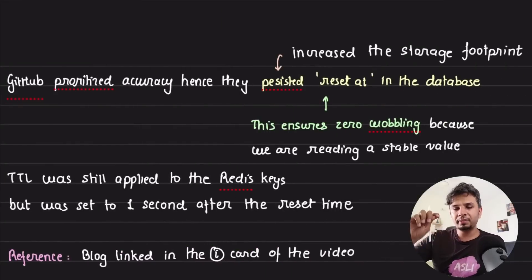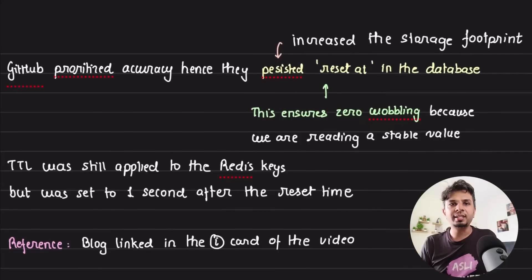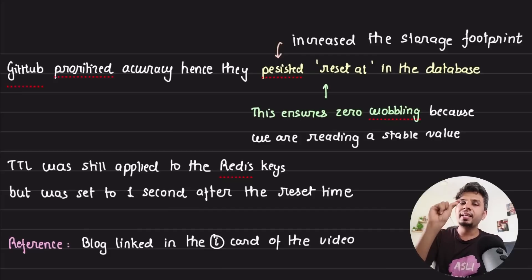So they wanted something simpler over there. So what did GitHub do? Now GitHub did something very interesting. Because here wobble was very problematic for their end users, what they prioritized is they prioritized accuracy. Now, if they are prioritizing accuracy, they have to give up on something. So what they did is they increased their storage footprint, and they added one more key against every rate limit key that they had. They still went with TTL, no changes there, but to power the reset-at header, what they started doing is they started persisting the reset header in the database, right next to the rate limiting key.